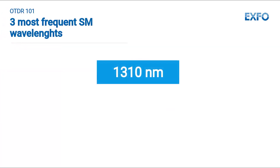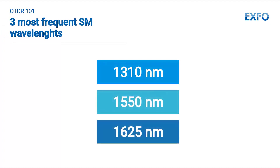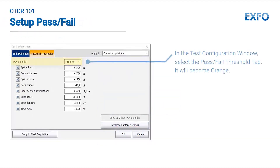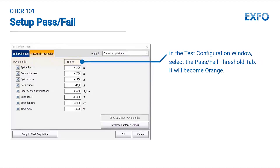For these three parameters, don't forget to apply the proper values at each wavelength as per the link environment. To set up the pass-fail thresholds, simply go to the main menu, select Test Configuration, and follow these easy steps.